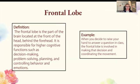Frontal lobe. The frontal lobe is a part of the brain located at the front of the head, behind the forehead. It's responsible for higher cognitive functions such as decision-making, problem-solving, planning, and controlling behavior and emotions. So when you decide to raise your hand to answer a question in class, the frontal lobe is involved in making that decision and coordinating the movement.